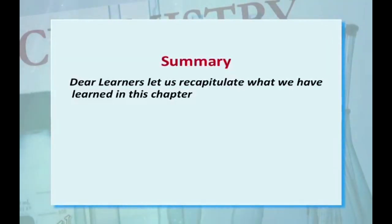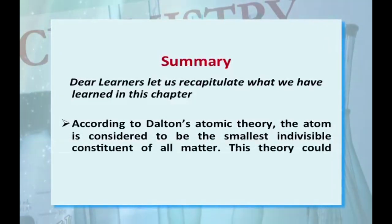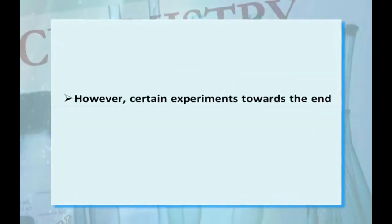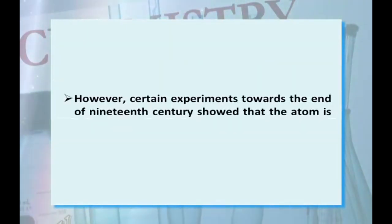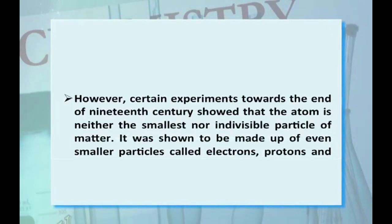According to Dalton's atomic theory, the atom is considered to be the smallest indivisible constituent of all matter. This theory could explain the law of conservation of mass, law of constant proportion and the law of multiple proportion. However, certain experiments towards the end of 19th century showed that the atom is neither the smallest nor the indivisible particle of matter. It was shown to be made up of even smaller particles called electrons, protons and neutrons.